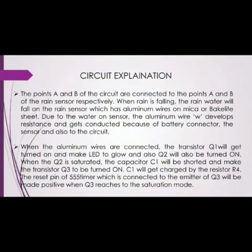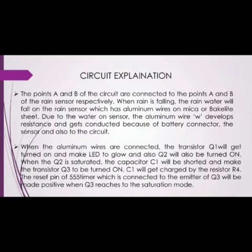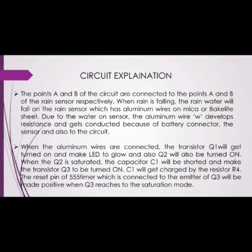Now comes the circuit explanation. Points A and B of the circuit are connected to points A and B of the rain sensor respectively. When rain is falling, rainwater falls on the rain sensor which has aluminium wires on a mica or backlight sheet. Due to the water on the sensor, the aluminium wire develops conductance because of the battery connector, the sensor, and the circuit. When the aluminium wires are connected, transistor Q1 gets turned on and makes the LED glow. Q2 will also be turned on. When Q2 is saturated, capacitor C1 will turn on transistor Q3. C1 will get shorted by resistor R4. The reset pin of the 555 timer, connected to the emitter of Q3, will be made positive when Q3 reaches saturation mode.